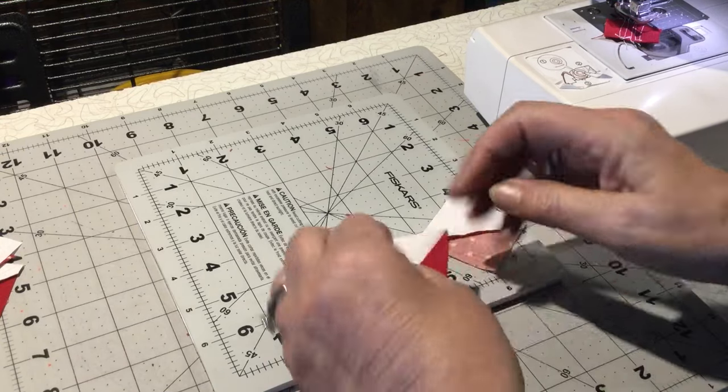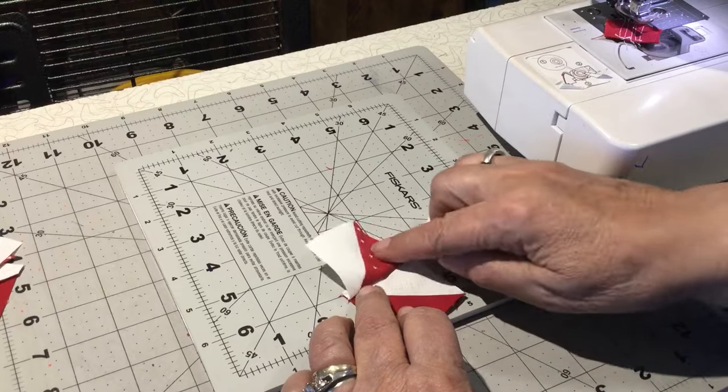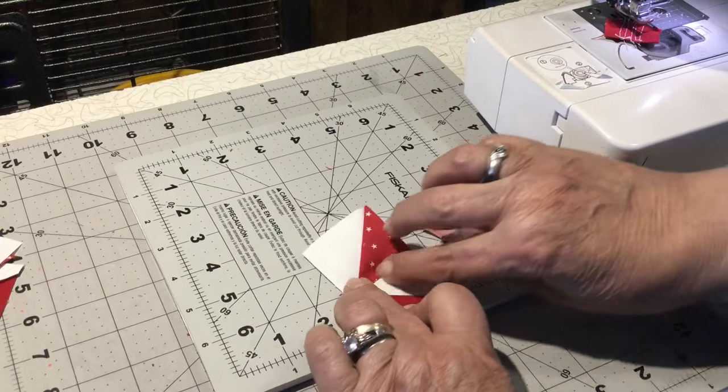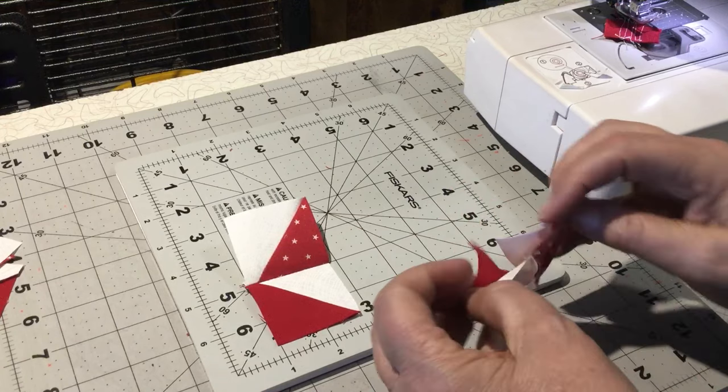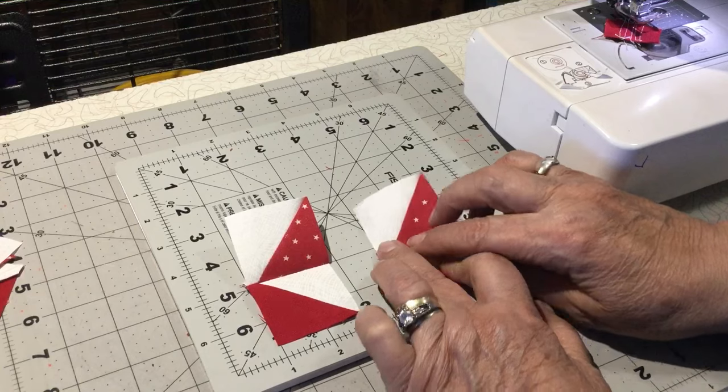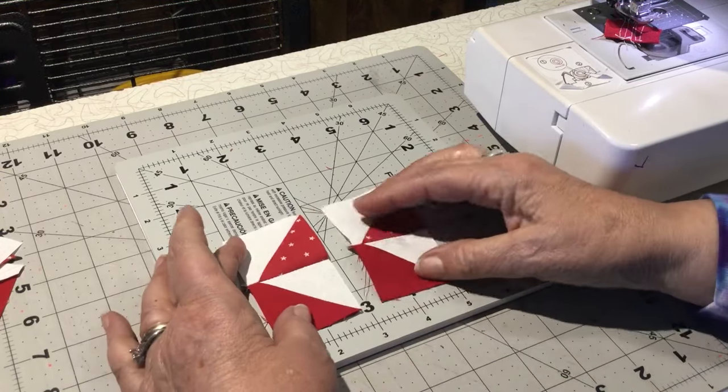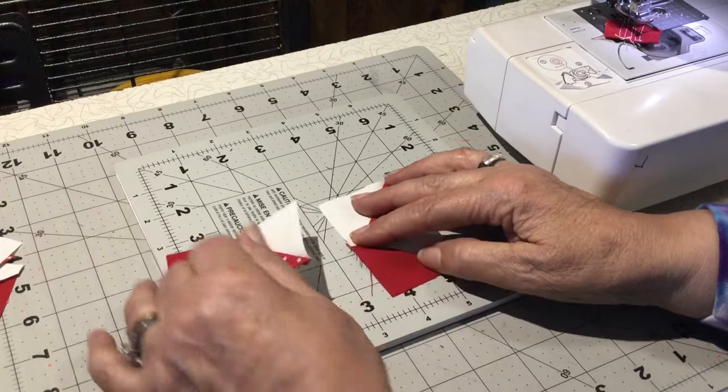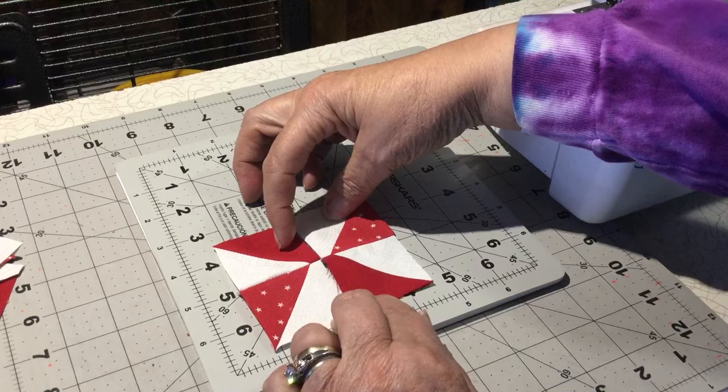So when you open these up, because this is the dark, the biggest share is the dark. That's where I finger press. Open this one up. Same thing, wherever the dark is. That covers the most of the white. See, those are identical. But when you flip one over, your pinwheel's coming out.